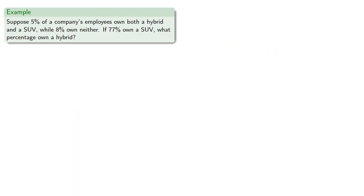So suppose we go and find the correct data, and let's say that we know that 5% of a company's employees own both a hybrid and an SUV, while 8% own neither. If 77% own an SUV, what percentage own a hybrid? And again, since we're given whole number percentages, let's assume we're working with 100 employees, so we can work with actual numbers.